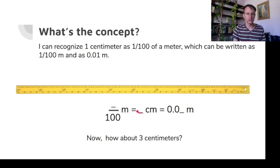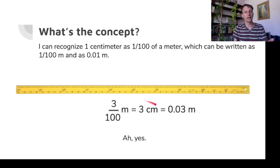Moving on. Now, let's do three centimeters. So we know that's going to be three, right? What fraction of a meter is three centimeters? Well, if one was one hundredth, then three is three hundredths. And here it is as a decimal. So three centimeters is three hundredths meter.